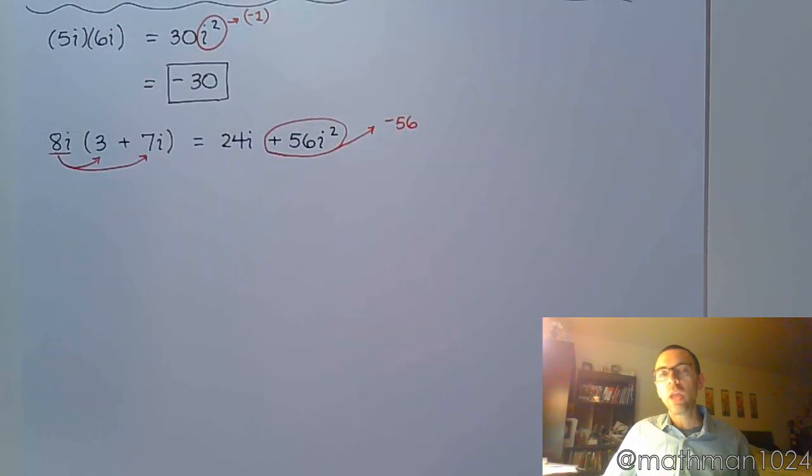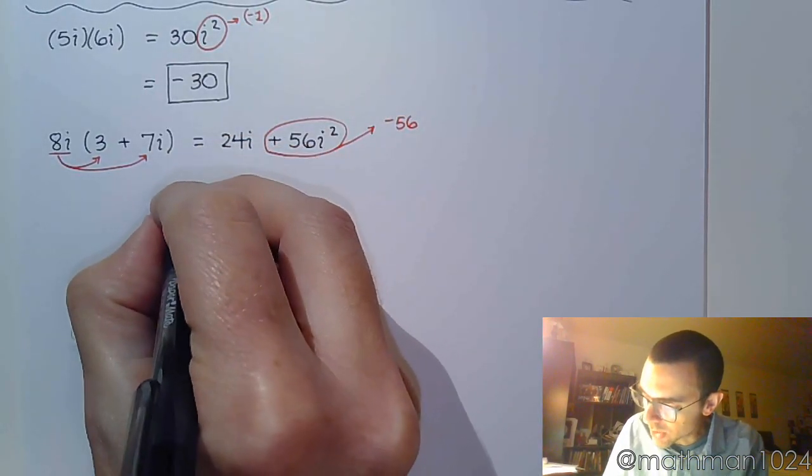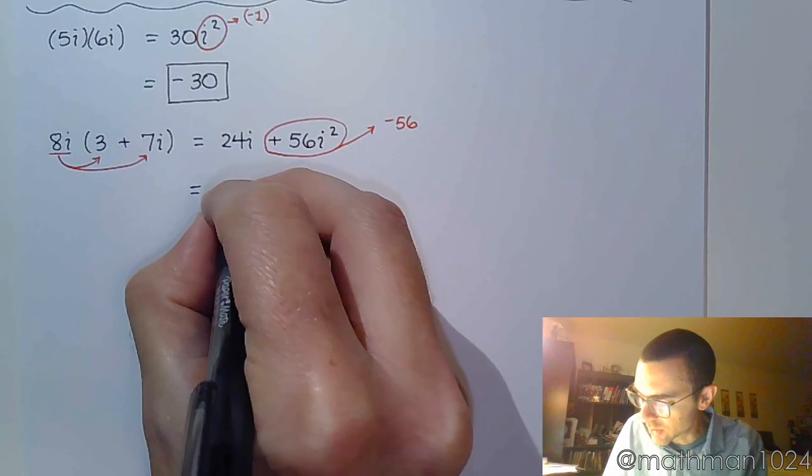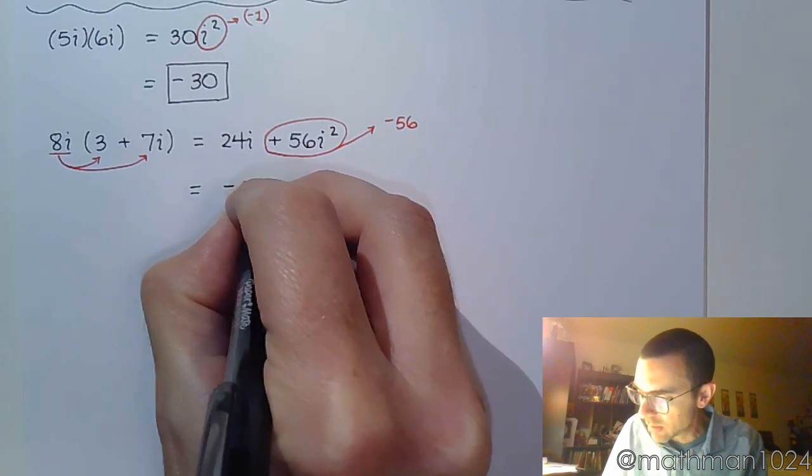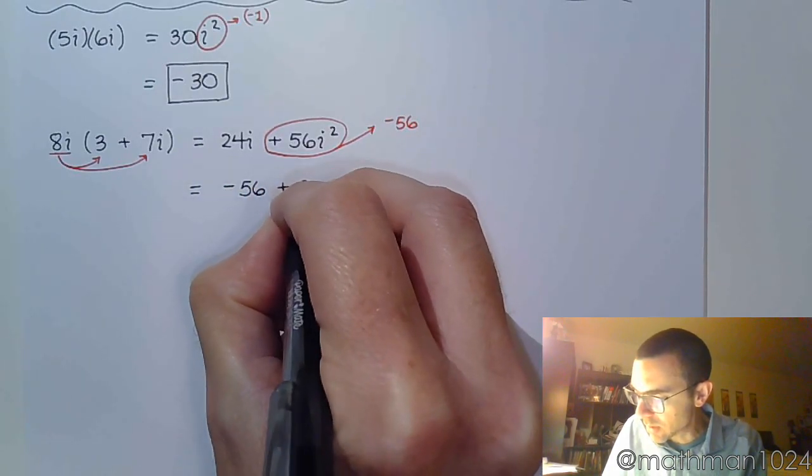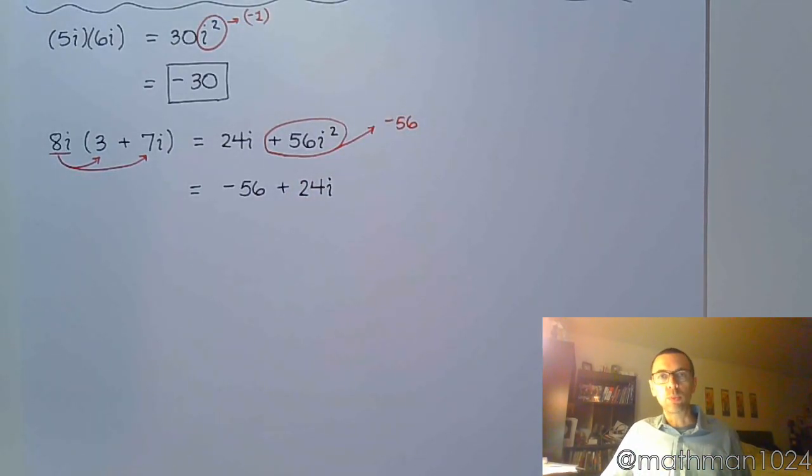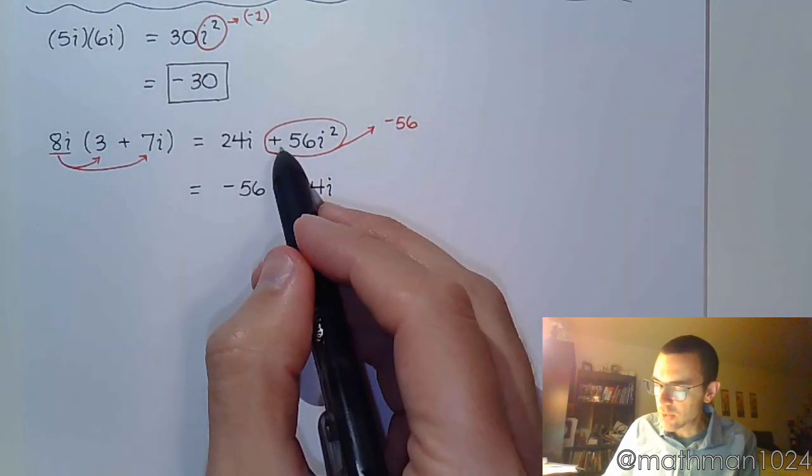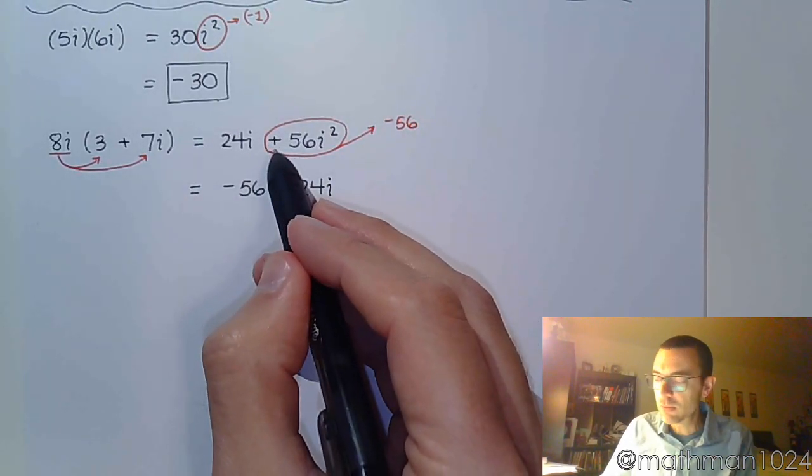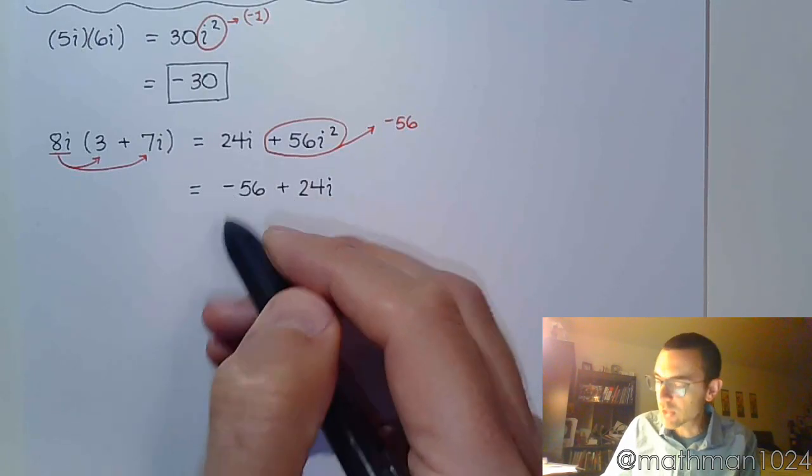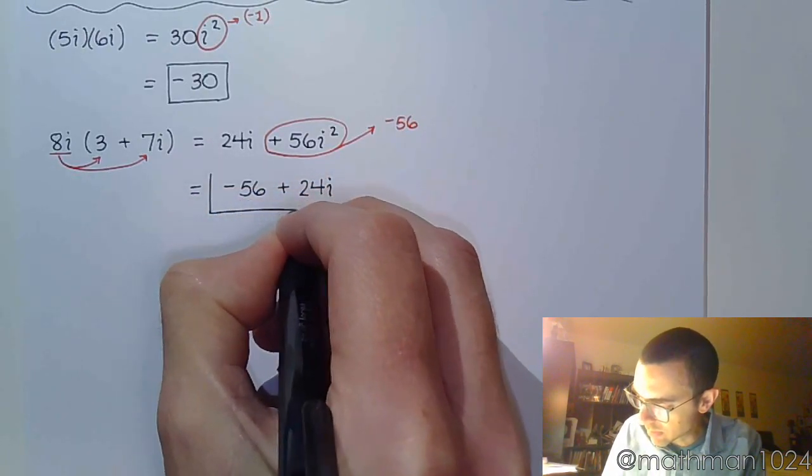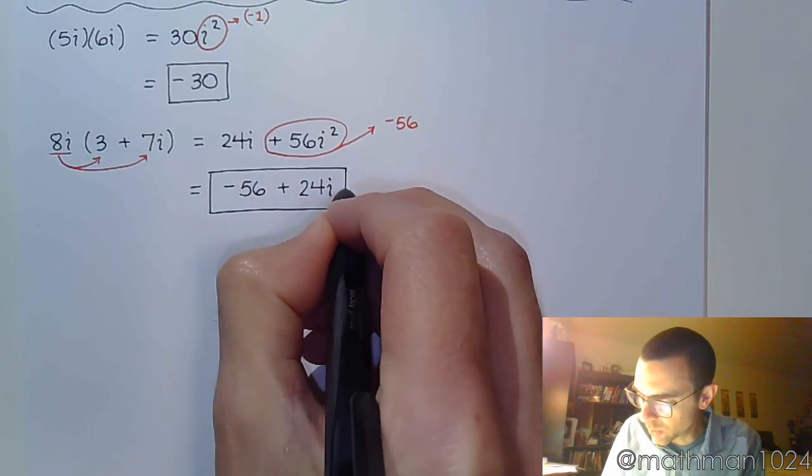And we also mentioned how we need to write our answers in standard form. Standard form says put your real part first, so it's negative 56, followed by the imaginary piece, which is 24i. So you distribute like normal. Anytime you see i squared, it's going to change the sign from whatever it is here to the opposite, so from positive to negative in this case. And that is all that we can do.